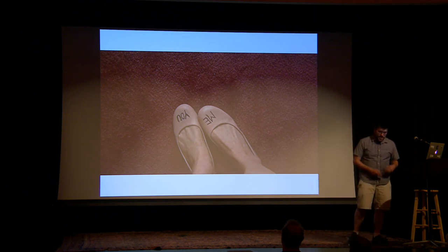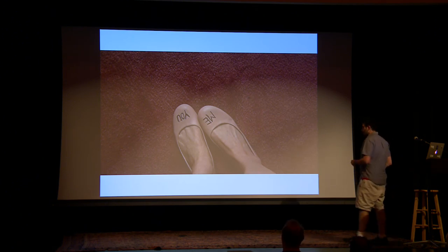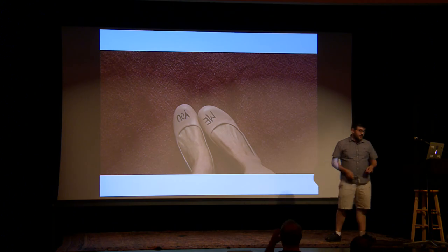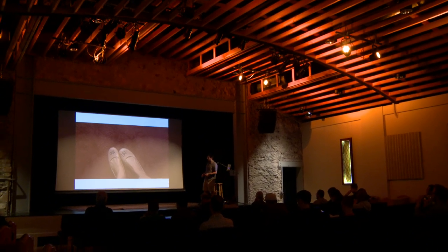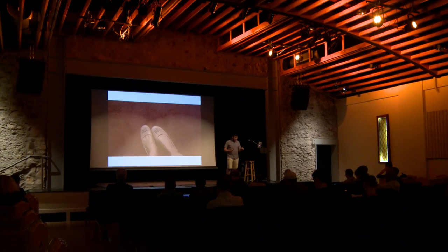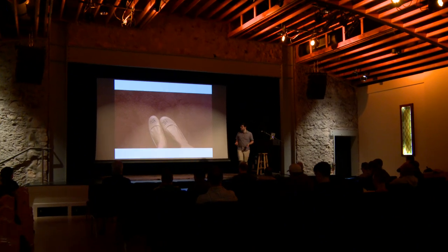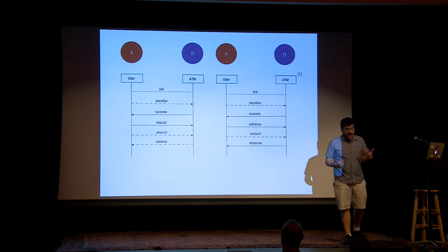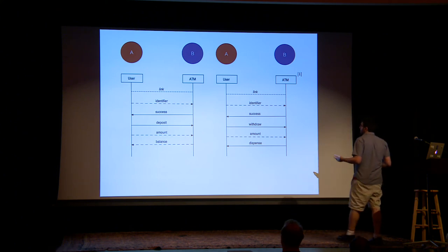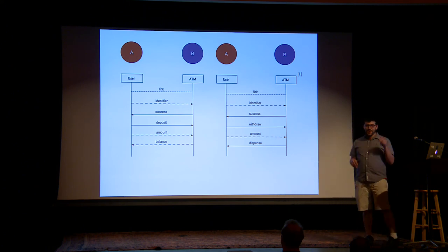Session types came around in the late 90s, but come from earlier work by Robin Milner, who created ML and a bunch of other great computer science. The early session type work was actually geared toward two parties — node A talks to node B. If you look at this diagram, from a paper about the original history of binary session types, they look almost like UML-style graphs.